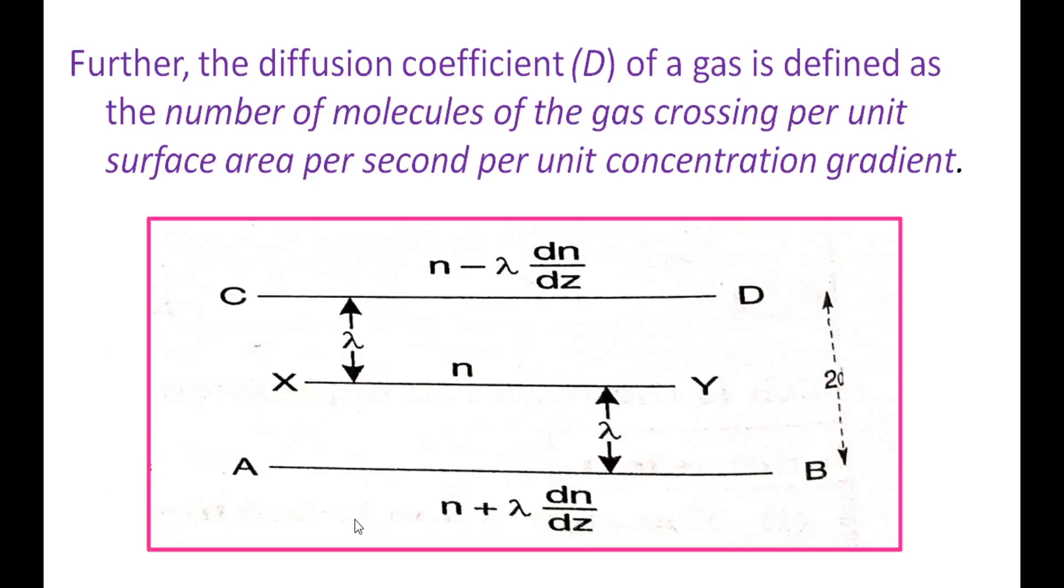Now we find the diffusion coefficient on the basis of phenomena of kinetic theory of gases. Diffusion coefficient is denoted by the letter D. Viscosity is eta, thermal conduction is k, diffusion coefficient is represented by D. Definition: number of molecules of gas crossing per unit area per second.